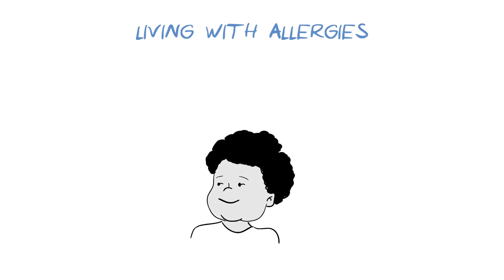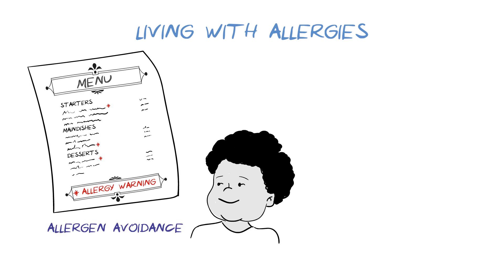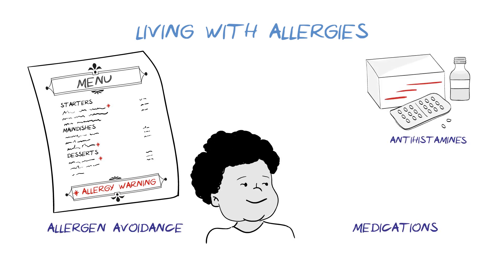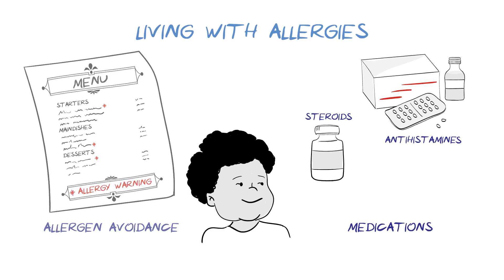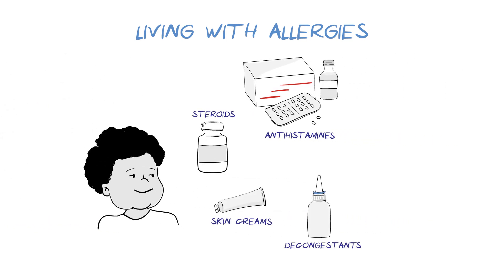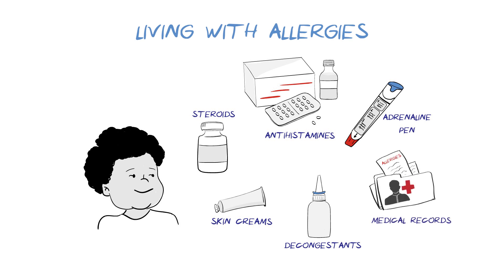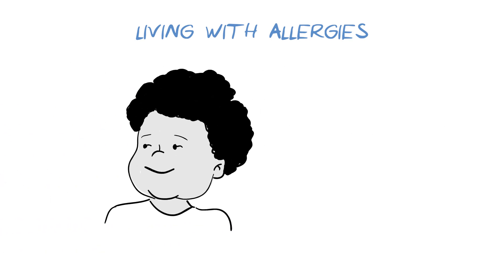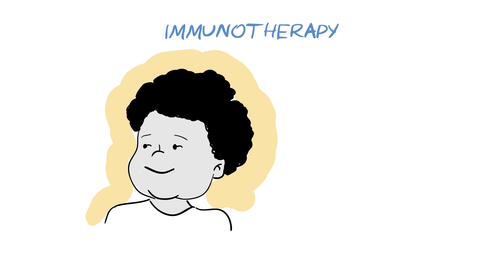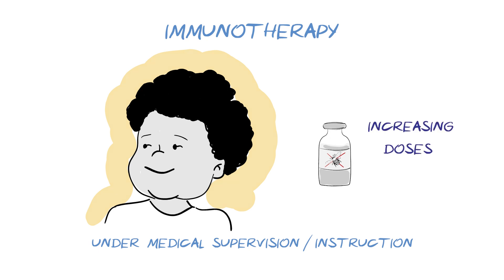If an allergy is diagnosed, there are many ways of reducing its impact. Firstly, it is important to try to avoid the allergen as much as possible. Medications are also available to help with symptoms. Antihistamines and steroids directly dampen down the allergic response. Other medications can provide symptom relief, such as skin creams or decongestants. If an adrenaline pen is prescribed, it should be carried at all times. It is also important that allergies are recorded on your medical records. Some allergies can also be cured through immunotherapy, which involves being exposed to a tiny amount of allergen in a safe and controlled way, and giving larger and larger doses over time, so that the body gradually becomes desensitized to it.